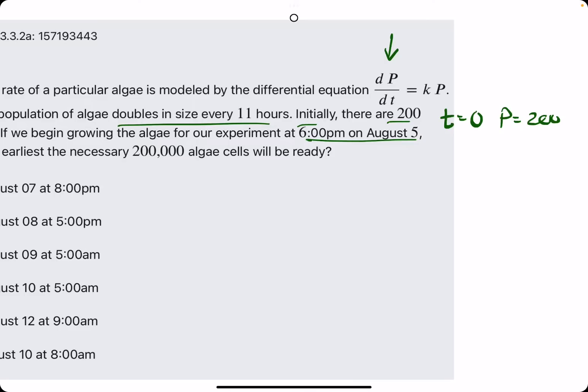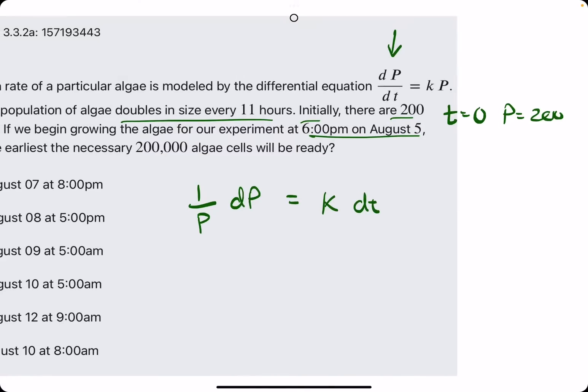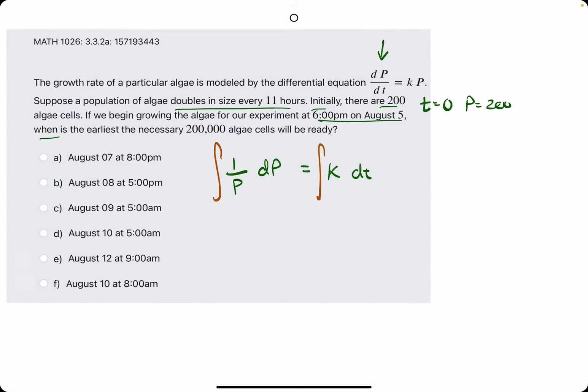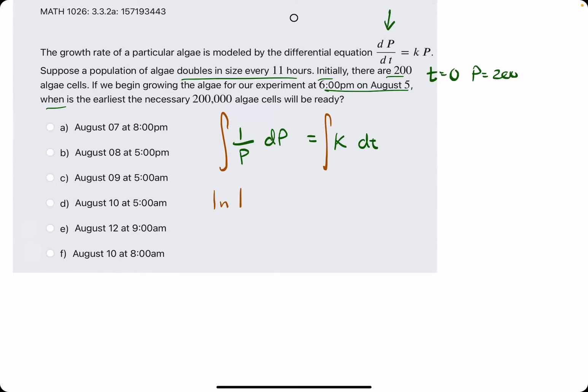Let's start by solving the differential equation using separation of variables. We'll divide by P or multiply by 1 over P on both sides, giving us this on the left side while simultaneously multiplying the DT to the right side. We have them separated. Now we will integrate both sides like normal. We get natural log of absolute value of P. And we get K times T.